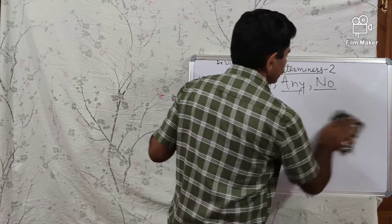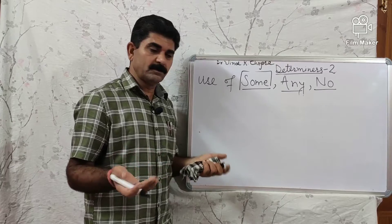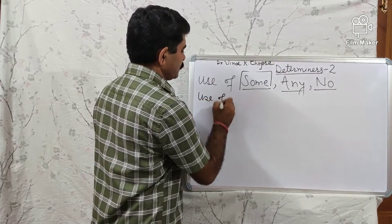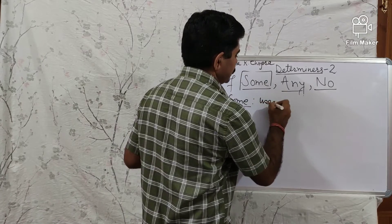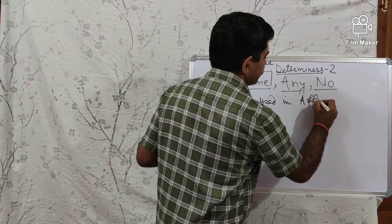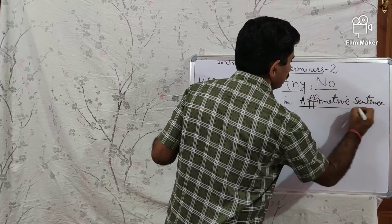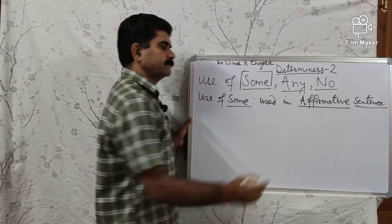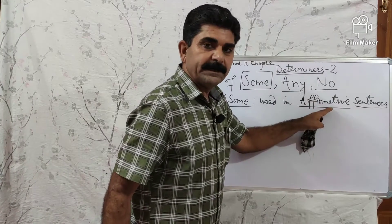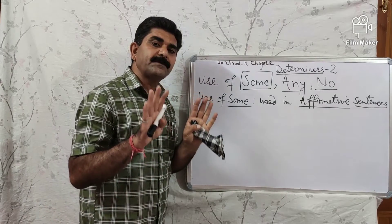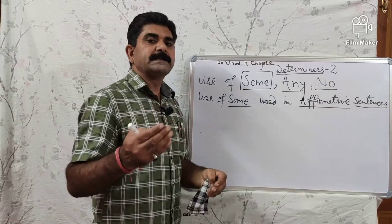Now, students, use of SOME. What is the difference between SOME and ANY? SOME is used in affirmative sentences — sentences that express a positive statement. No negative, no interrogative — just affirmative sentences.